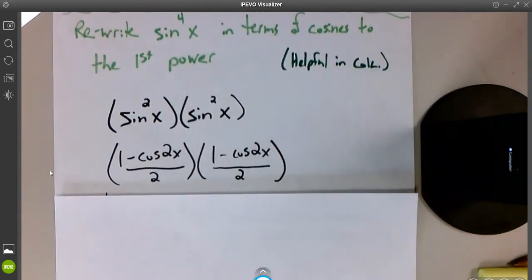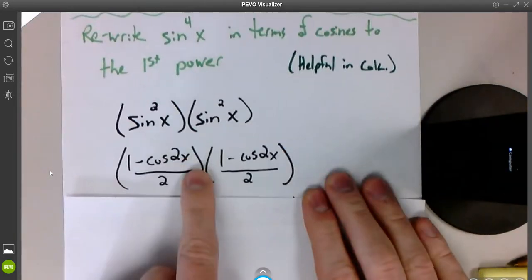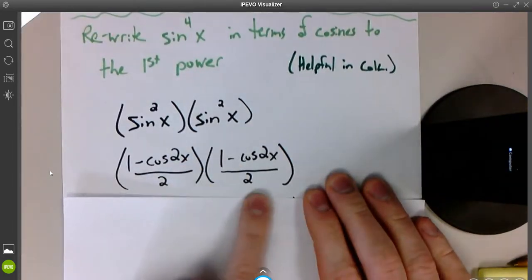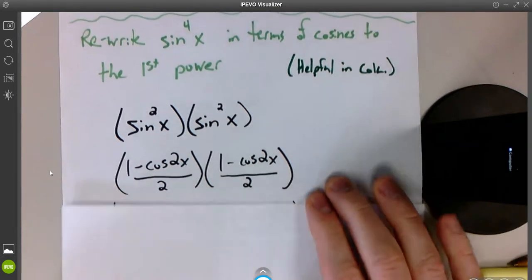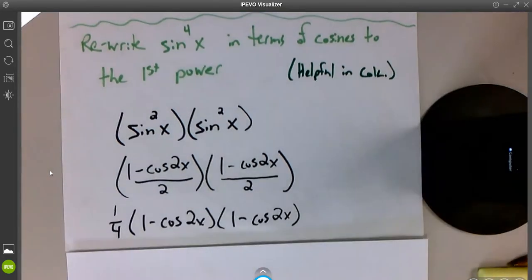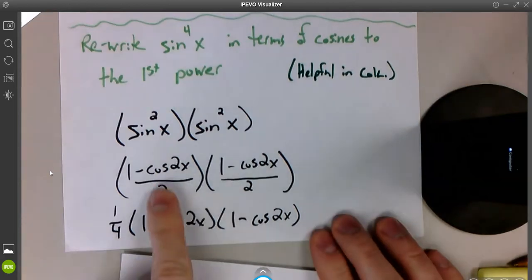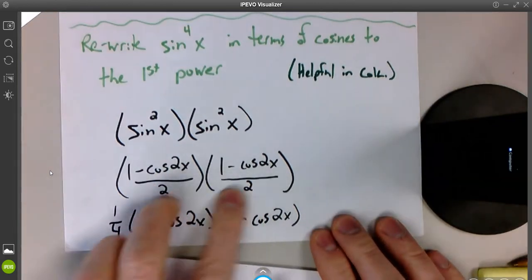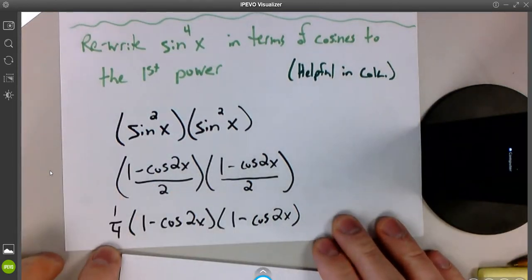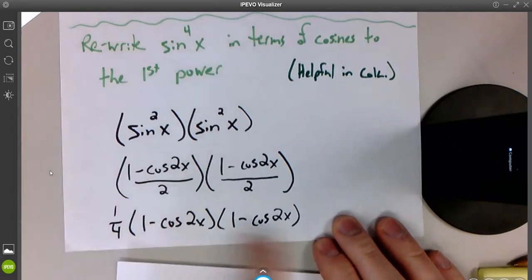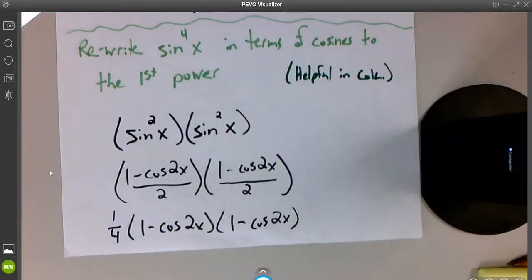Now the whole rest of this thing is going to be a big algebra problem. So let's start here. We're multiplying two fractions together. I'm going to multiply their numerators by foiling and multiply their denominators. The way you'll see the book write this is that two times two that's in the denominator, they will actually pull out front and call it one-fourth. Okay. Now we're going to multiply the numerators together.